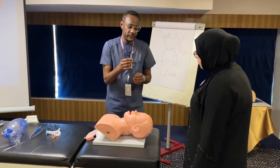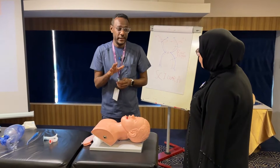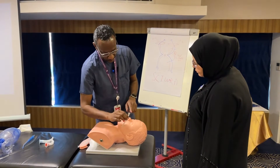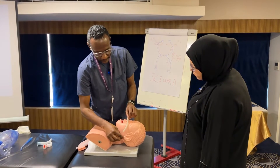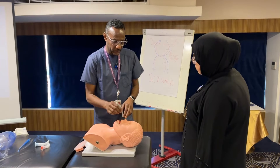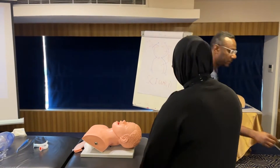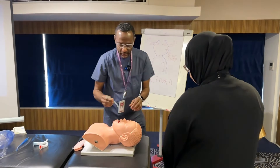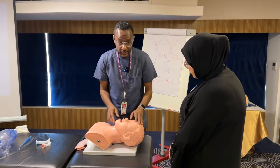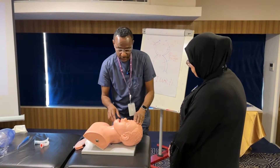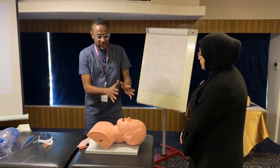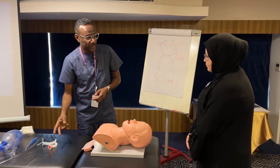Regarding the nasopharyngeal airway, this is contraindicated if you are concerned about fracture of the base of skull or if there are excessive facial injuries. How to size it: from the tip of the nose to the ear lobe. Then you can insert it perpendicular — you need to lubricate it first — and then insert it perpendicularly here. Reassess to make sure the airway is not obstructed. So now we know how to assess the airway, how to open the airway, and how to use the airway adjuncts.